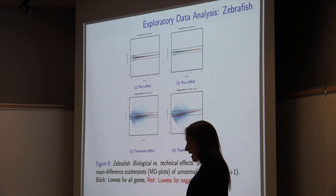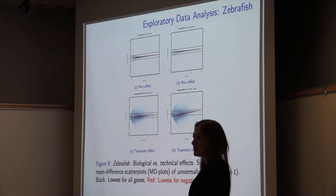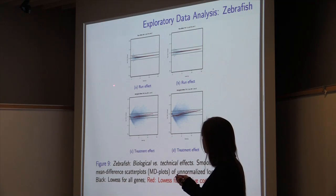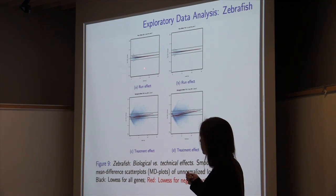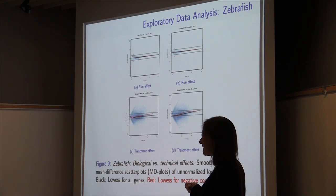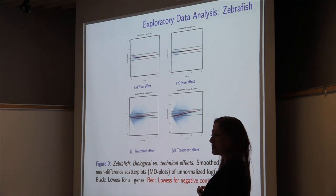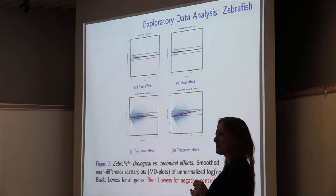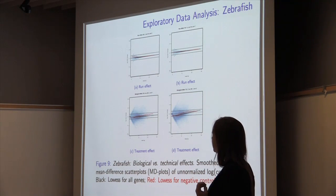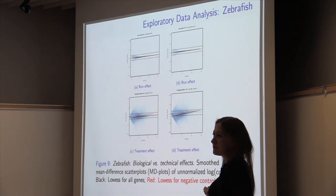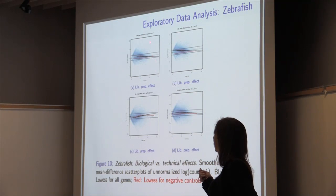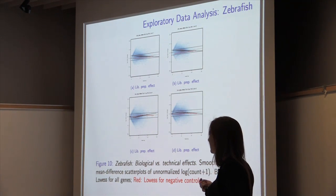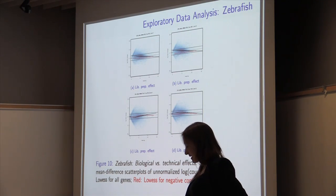Comparing biological and technical effects using MA plots — mean-difference plots of log fold changes versus average log expression. When comparing two samples from the same library in different runs, we see very little run effect. When comparing control and treated libraries, we see large treatment effects. But when comparing different libraries, we have strong library preparation effects of about the same magnitude as the treatment effect. The two sequencing runs show extremely high reproducibility, so we'll pool reads from both runs, leaving three treated and three control fish. Library preparation effects are of the same magnitude as the treatment effects.